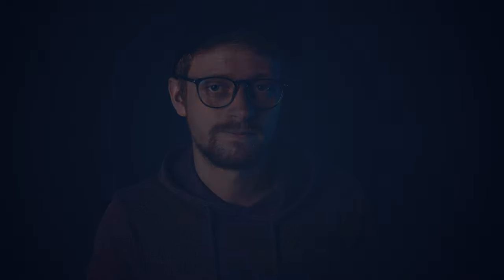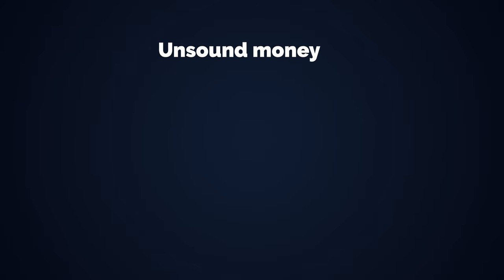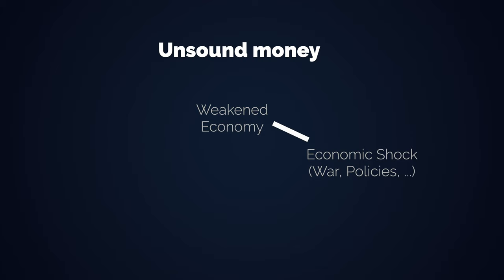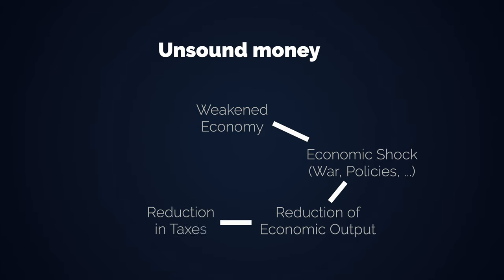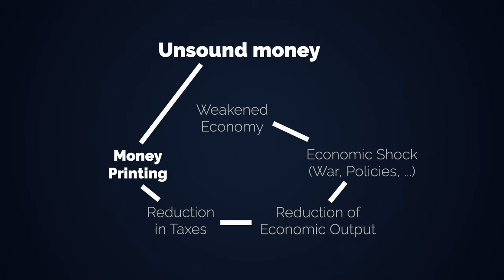But how does it happen? First, an unsound and inflatable fiat currency seems to be the requirement. The common pattern is an already weakened economy hit by an economic shock like a war, awful policies, and maybe a pandemic. This leads to reduction of economic output and therefore a reduction in tax revenues. Then comes the cause: money printing, done to compensate for the missing tax revenues. Increasing the monetary supply leads to inflation — not necessarily instantly, as shortages of money can exist and the velocity of money is a key factor, but once velocity picks up, the depreciation of money is inevitable.